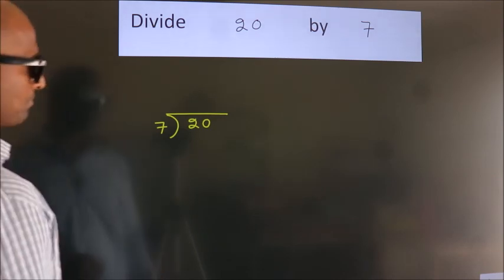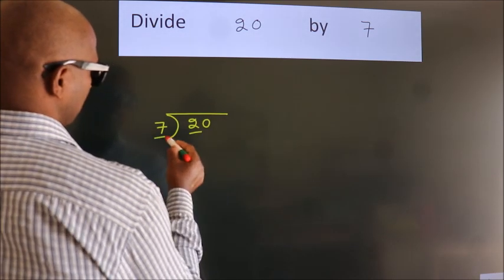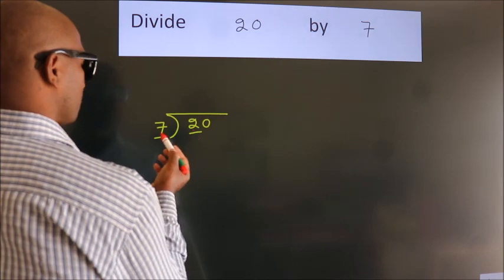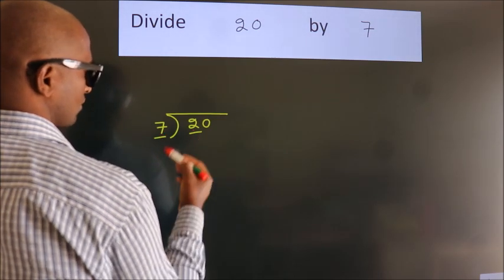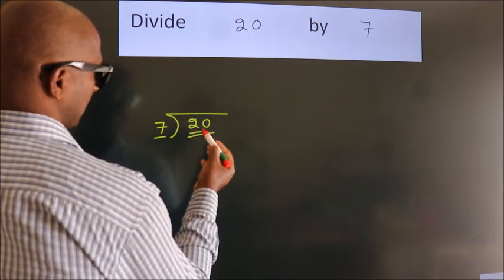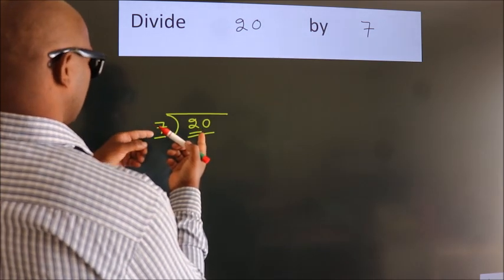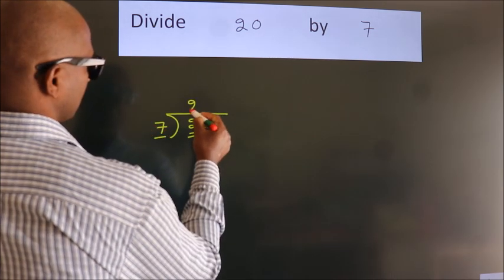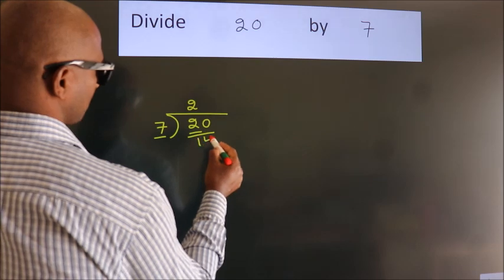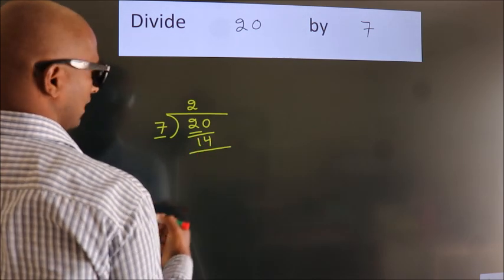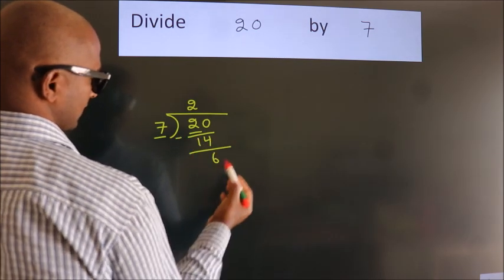Next. Here we have 2. Here 7. 2 smaller than 7. So we should take 2 numbers. 20. A number close to 20 in 7 table is 7 2s 14. Now we should subtract. We get 6.